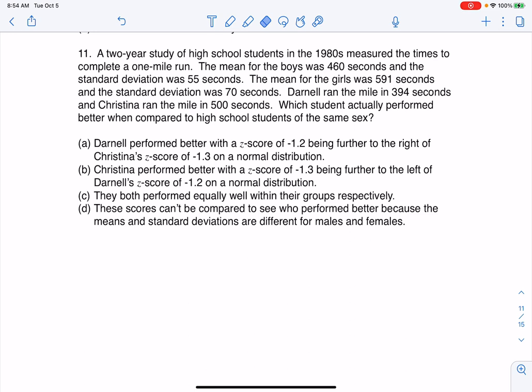A two-year study of high school students in the 1980s measured the times to complete a one-mile run. The mean for the boys was 460 seconds and the standard deviation was 55 seconds. The mean for the girls was 591 seconds and the standard deviation was 70 seconds. Darnell ran the mile in 394 seconds and Christina ran the mile in 500 seconds. Which student actually performed better when compared to high school students of the same sex?